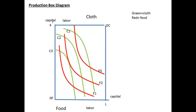Then we do a nifty trick. We put the two maps for food and cloth together, to give us a box diagram in production. This idea was actually the work of two British economists, Edgeworth and Bowley, so it is sometimes called the Edgeworth-Bowley box diagram. The important part to remember is that our origin for food is at OF, and the origin for cloth is at OC.